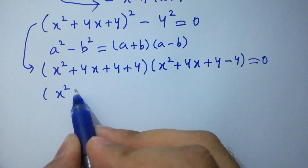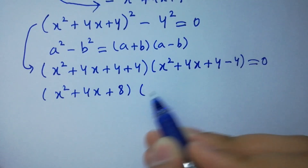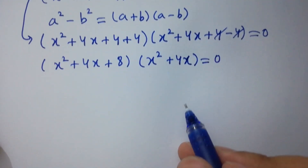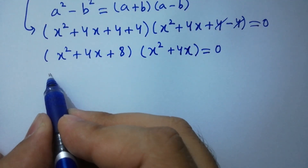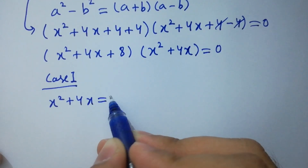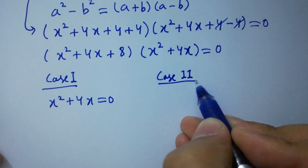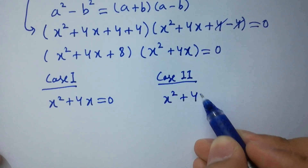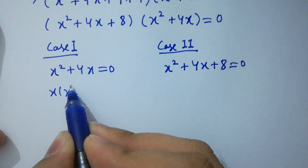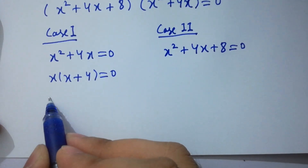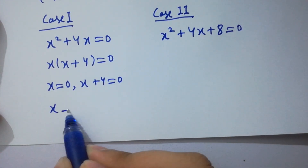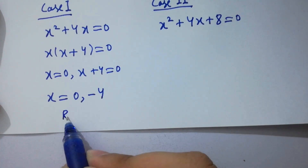So x² + 4x + 4 equals 8, and here x² + 4x — the 4 and 4 cancel — we have x² + 4x equals 0. We have two cases: Case 1 is x² + 4x equals 0. Factoring x common: x(x + 4) equals 0, so either x equals 0 or x + 4 equals 0. We have two real values of x: 0 and −4.